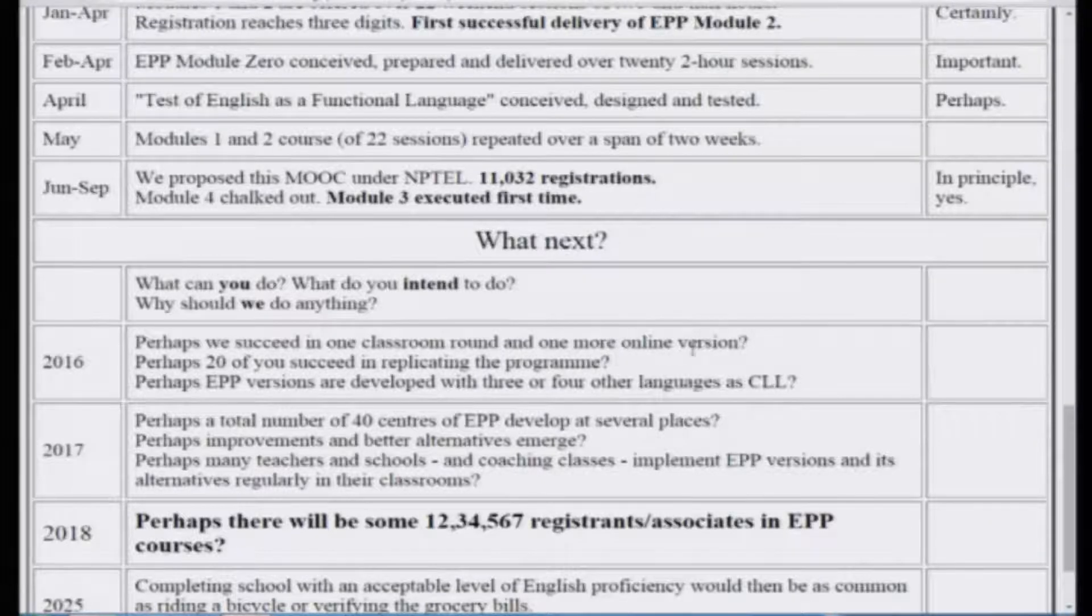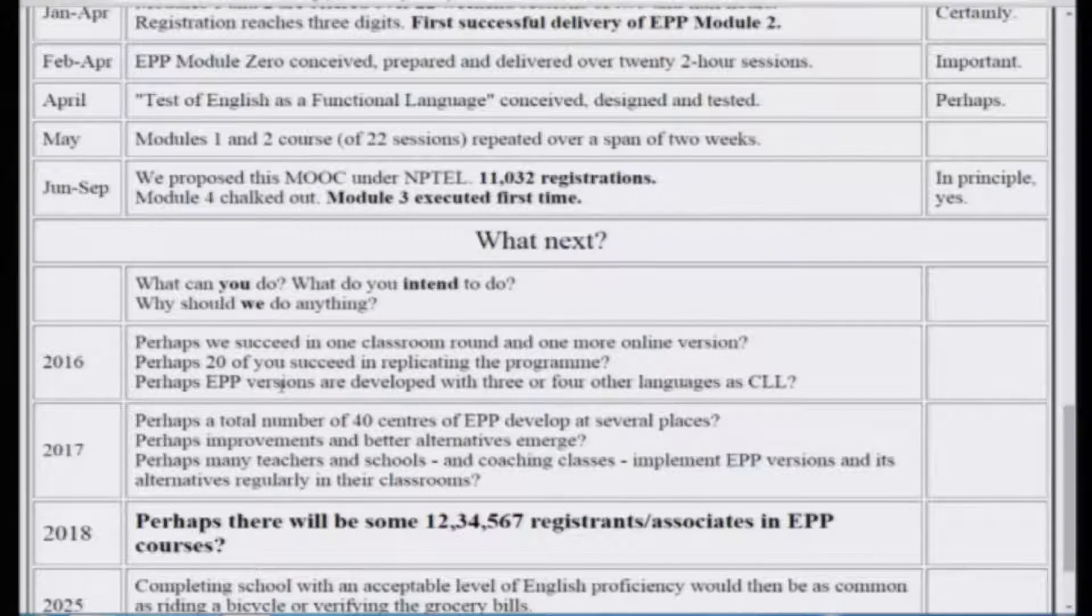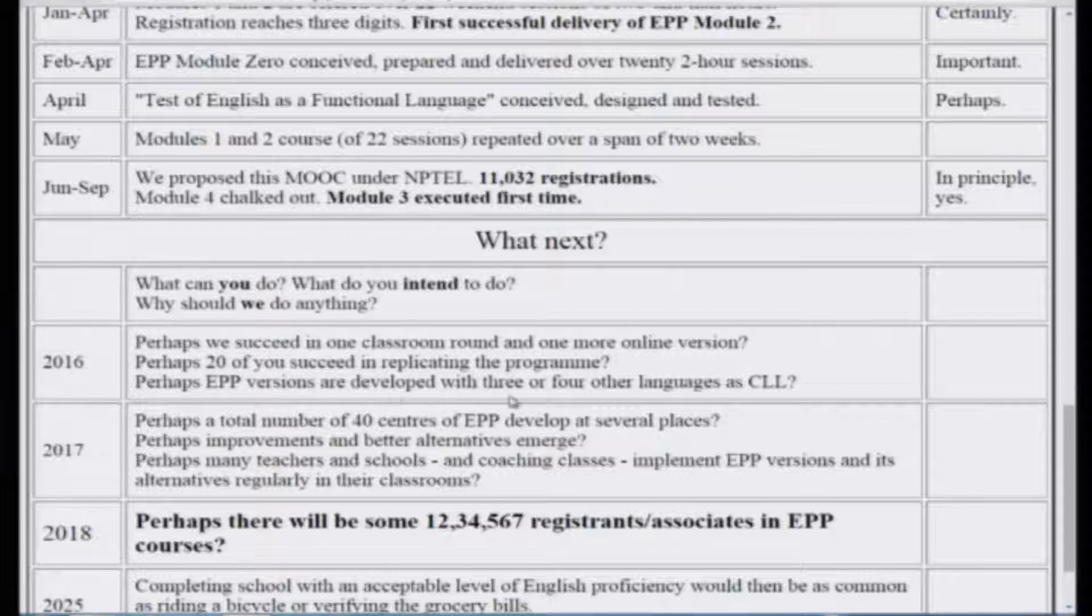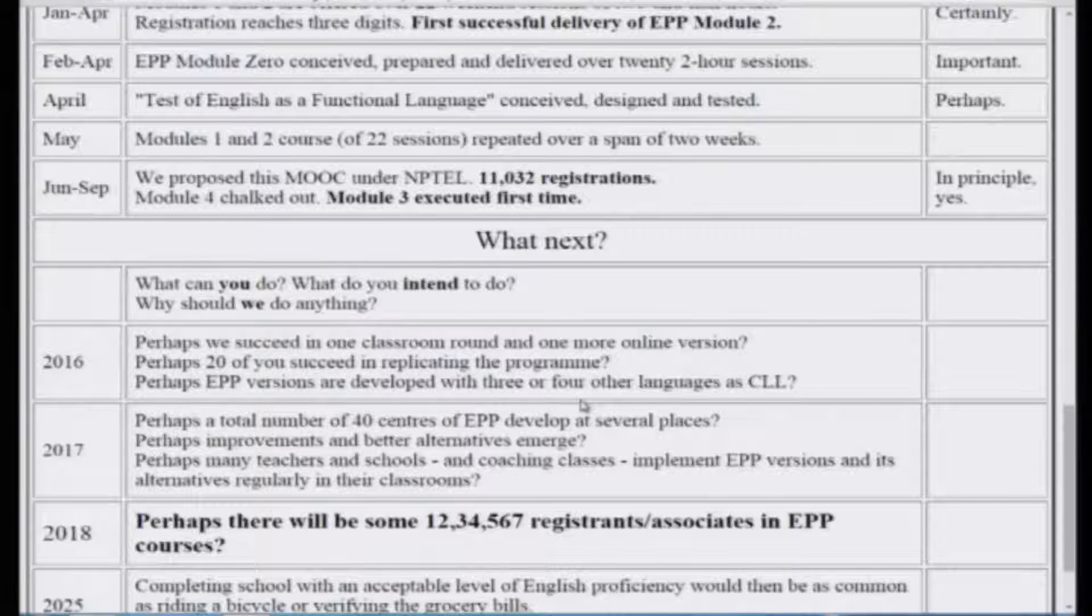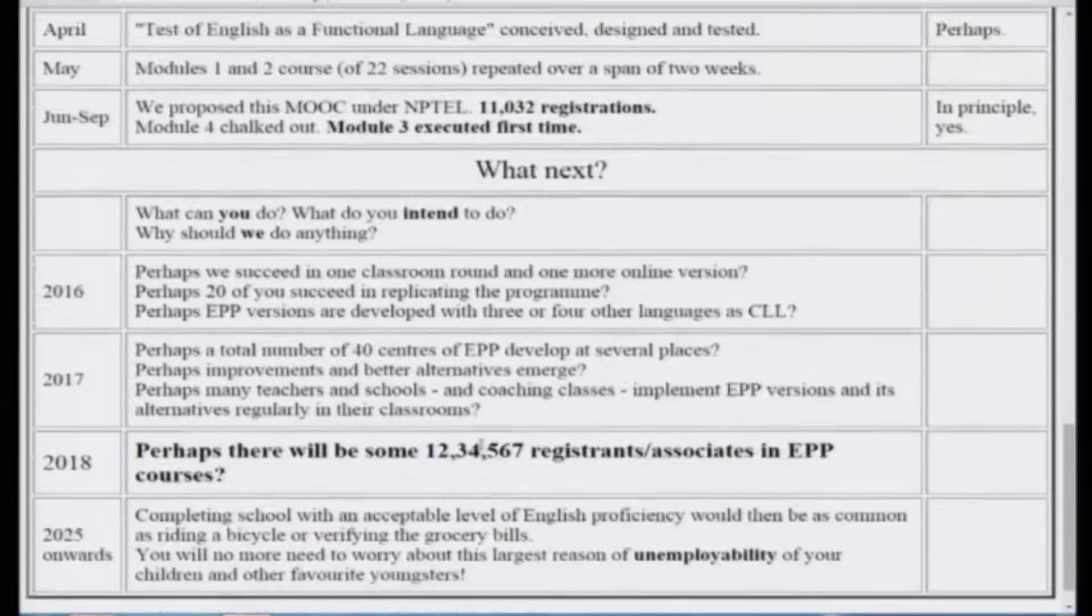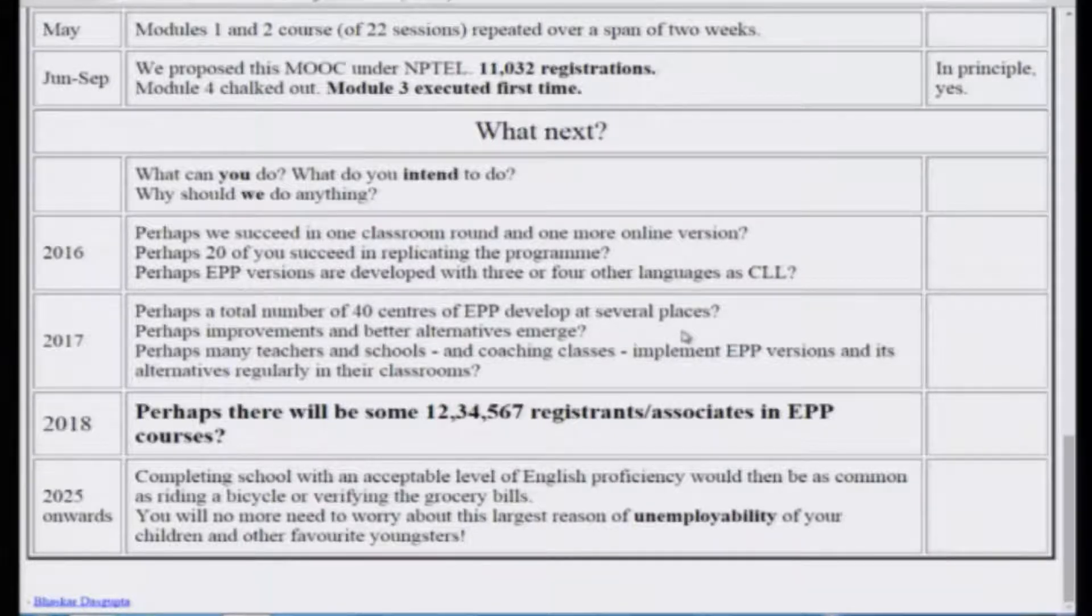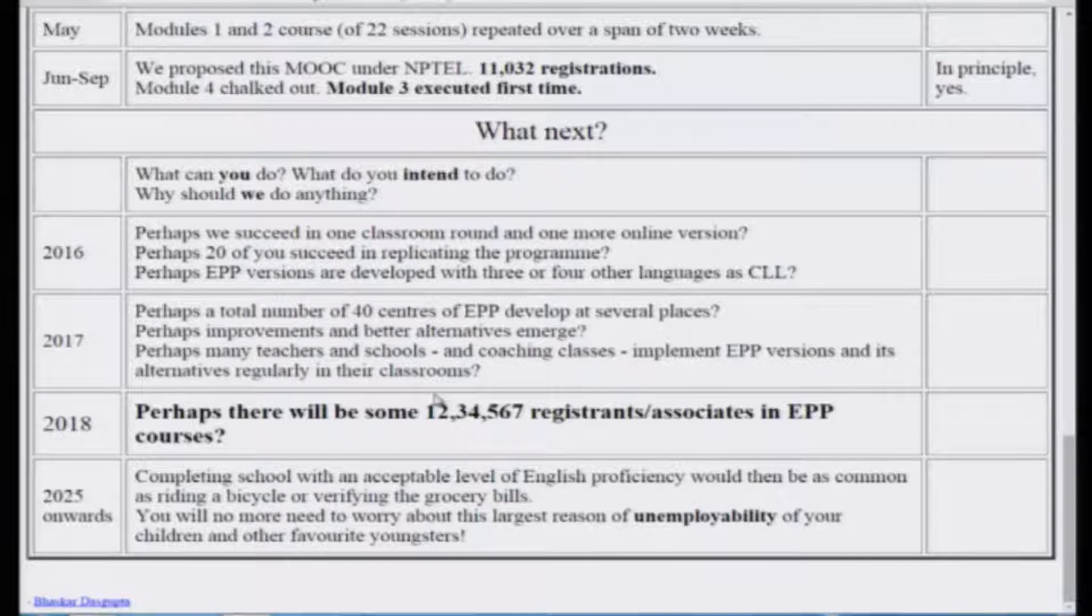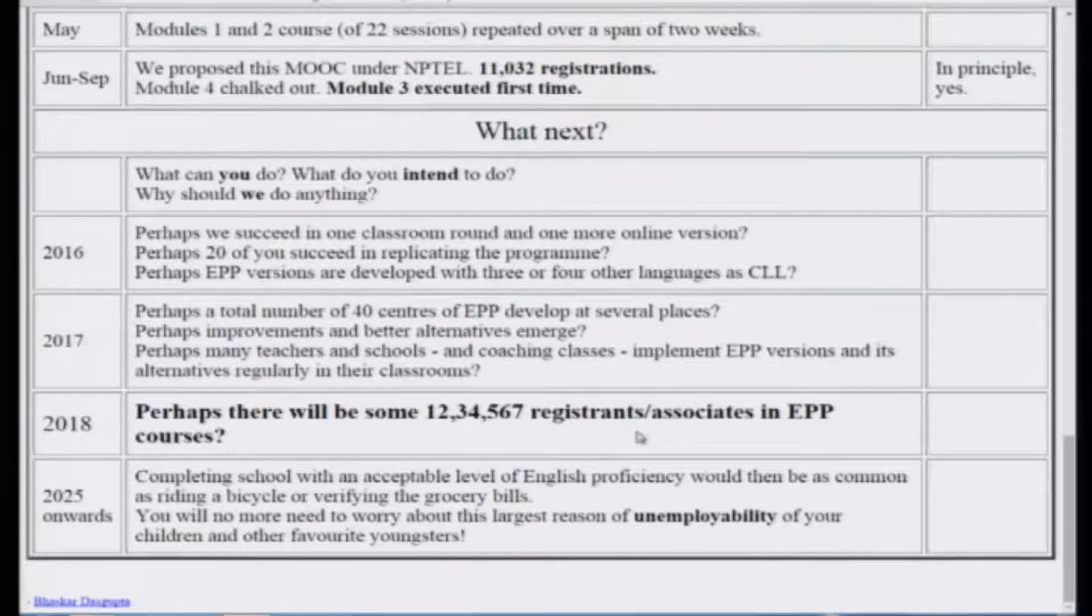For example, we have seen that from 9, 10 to 11,000 we have come within a span of 2 years. Now what can happen over next 2 years? In 2016, perhaps we succeed in one more classroom round and one more online version. Perhaps 20 of you succeed in your endeavors in replicating the program. Perhaps EPP versions are developed with 3 or 4 other languages as a common local language and out of those 3 or 4 languages perhaps one is Russian. Anything is possible, you never know. Then in 2017, what can happen? Perhaps a total number of 40 different centers of EPP develop at several places. Perhaps improvements and better alternatives emerge. Perhaps many teachers and schools and coaching classes implement EPP versions and its alternatives regularly in their classrooms.